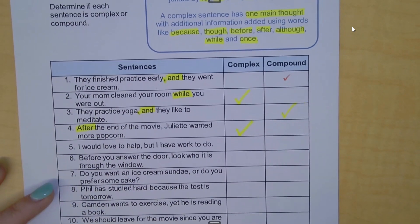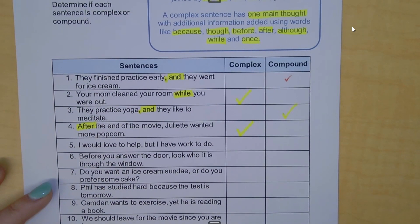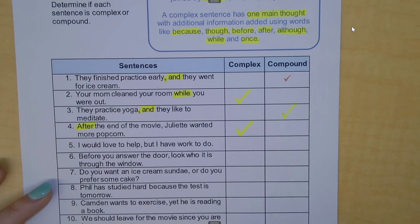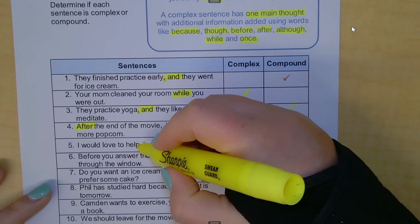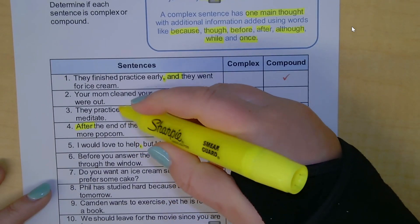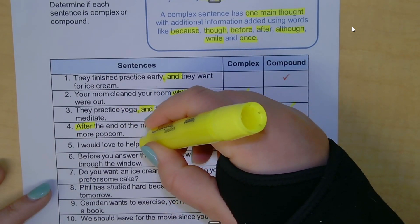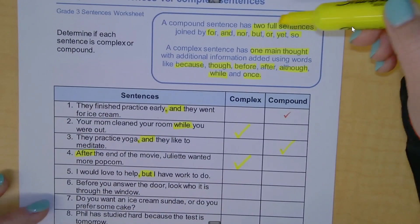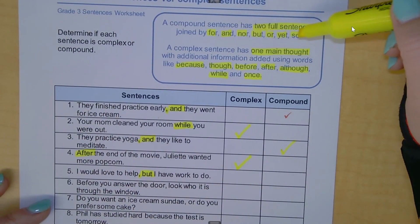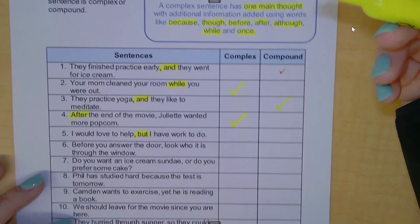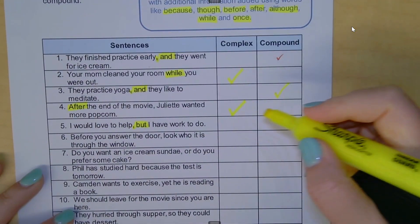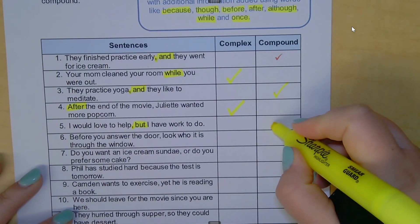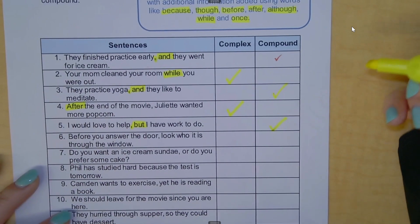Number five: 'I would love to help, but I have work to do.' I see a comma and the conjunction 'but.' But is one of my FANBOYS, so I know this is a compound sentence.